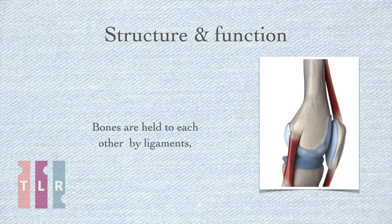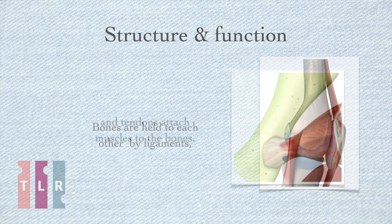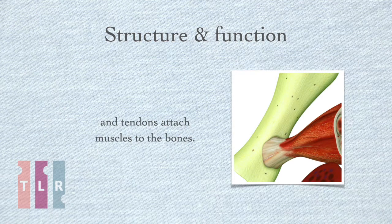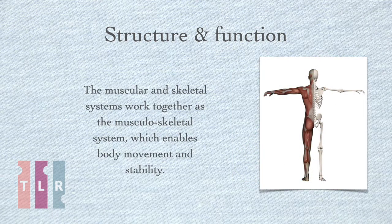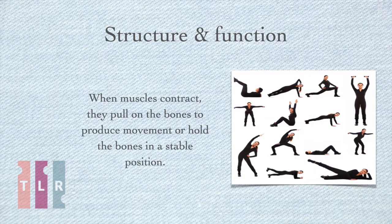Bones are held to each other by ligaments, and tendons attach muscles to the bones. The muscular and skeletal systems work together as the musculoskeletal system, which enables body movement and stability. When muscles contract, they pull on the bones to produce movement or hold the bones in a stable position.